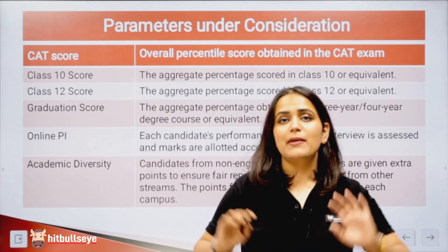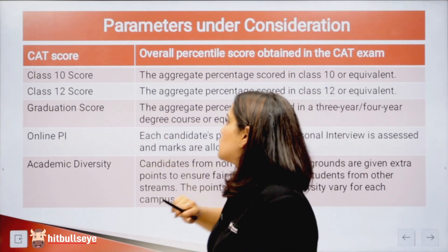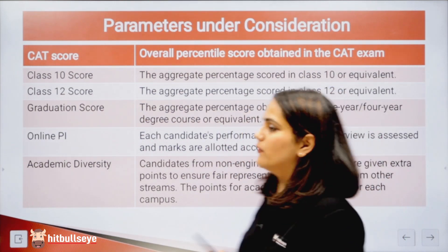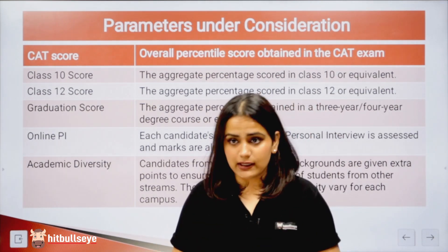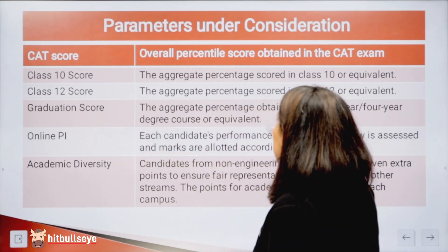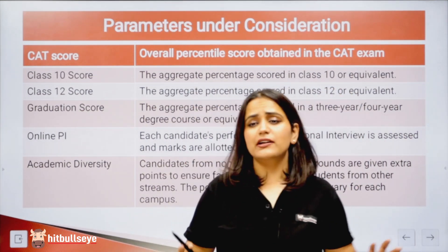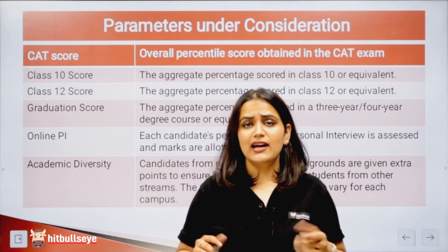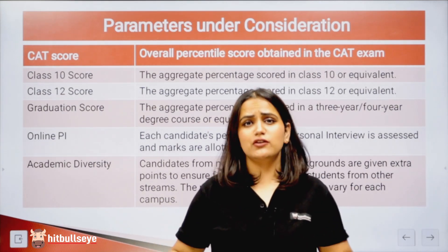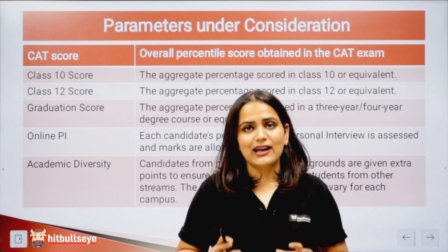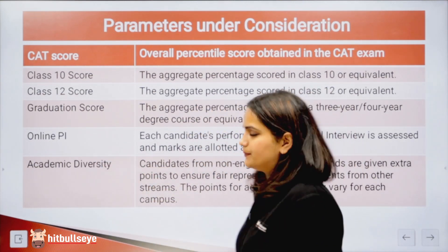The aggregate score in Class 10 — you cannot say best of four or best of five, it will be the aggregate. Same goes for Class 12 — the aggregate percentage scored in Class 12 or equivalent. Most people ask whether it's best of four or best of five — it will be the aggregate. For graduation, the aggregate percentage obtained in a three, four, or five-year degree course is evaluated, regardless of which degree you've done or how many years you spent.